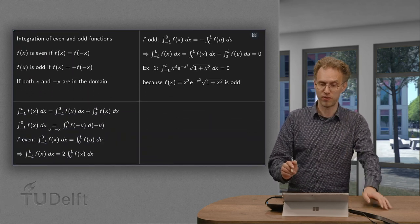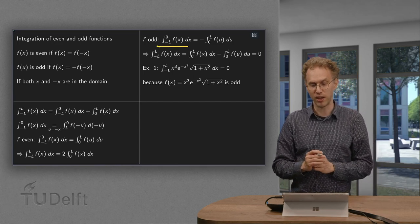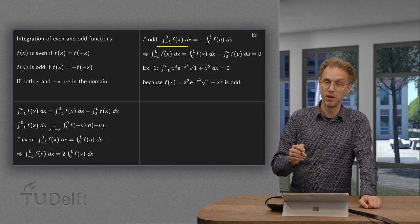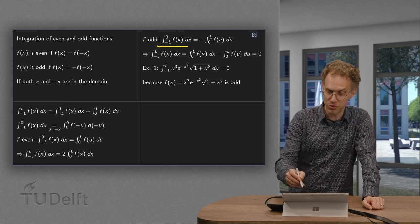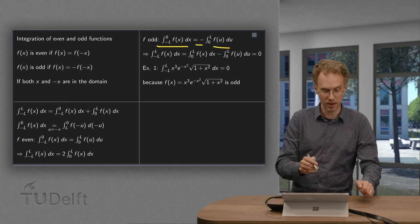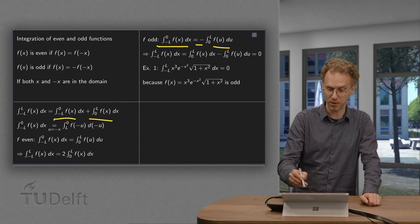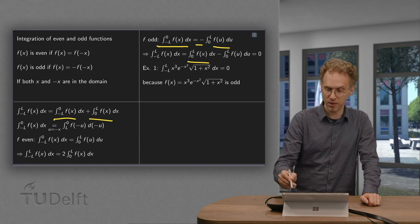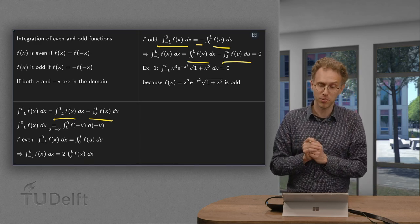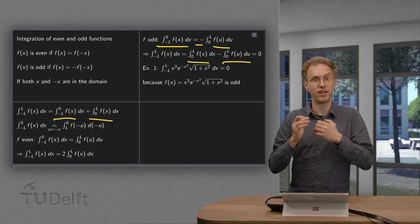Now, if f is an odd function, again, we have integral from minus l to l, f of x dx is then integral from 0 to l, f of minus u du. But now f of minus u equals minus f of u. So if we now add the integrals from minus l to 0 and the integral from 0 to l, we have the integral from 0 to l minus the integral from 0 to l. u is again a dummy variable, just as x, so these integrals are the same, which means that we end up with 0.